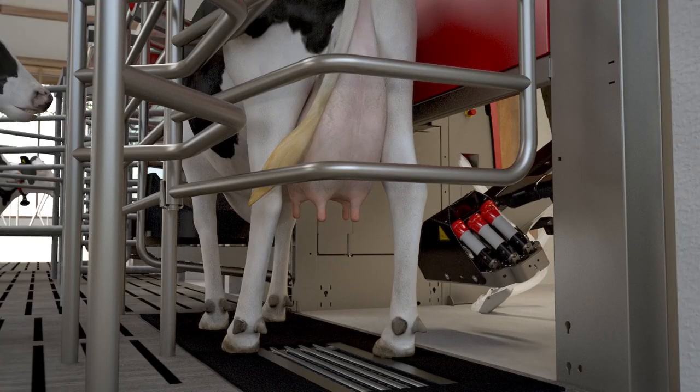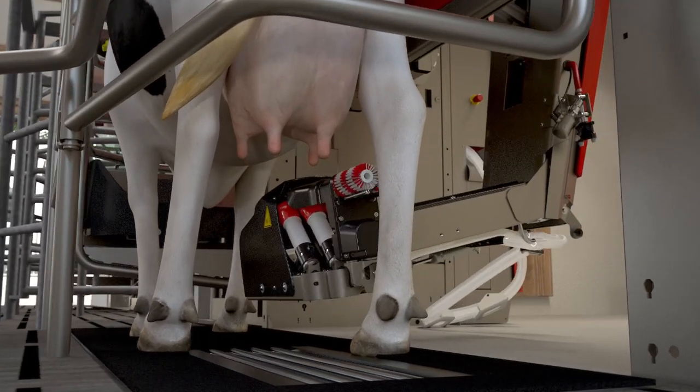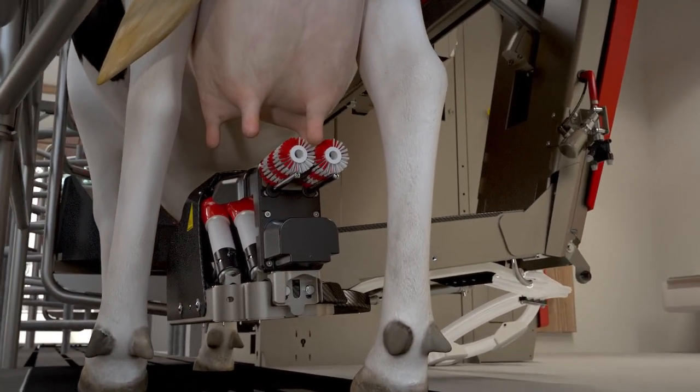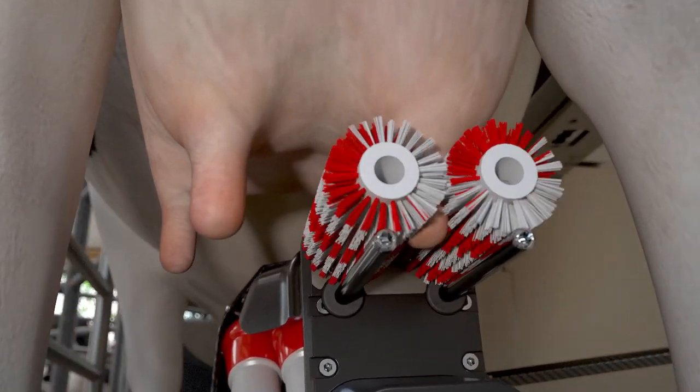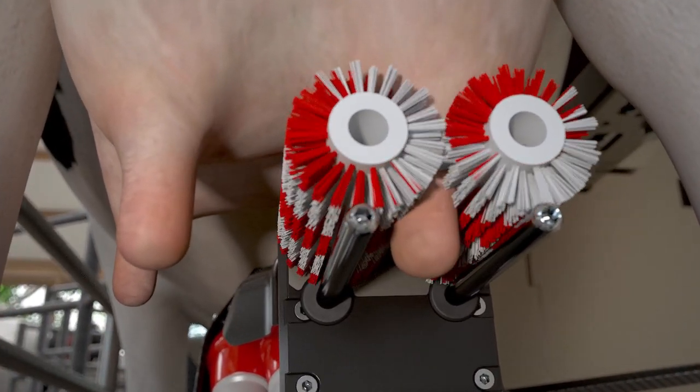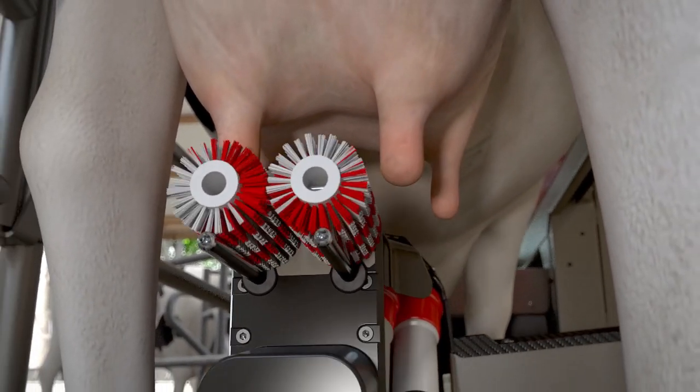For optimum hygiene and stimulation, brushes are used for cleaning and disinfecting. By using brushes, the teats are cleaned more thoroughly than just rinsing. The underneath of the udder can be cleaned. No vacuum system is used, meaning that no milk is lost during cleaning. Above all, the chance of cross-contamination is reduced to a minimum.